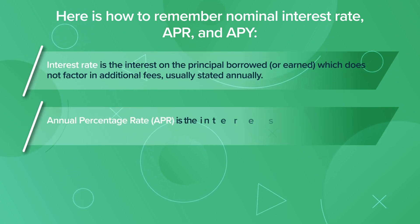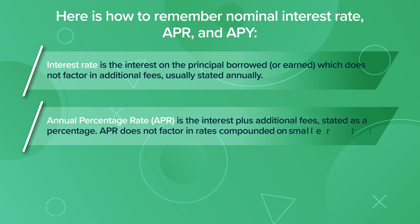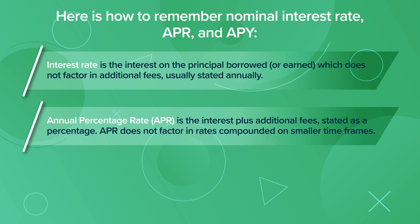Annual percentage rate, or APR, is the interest plus additional fees, stated as a percentage. APR does not factor in rates compounded on smaller time frames.